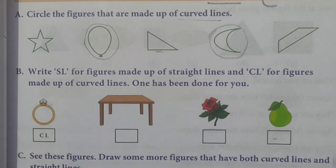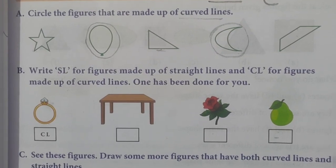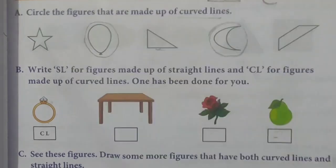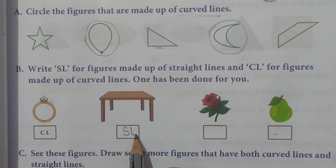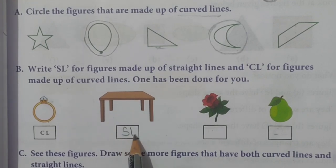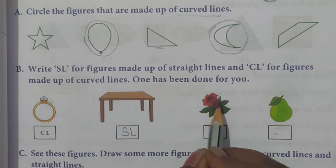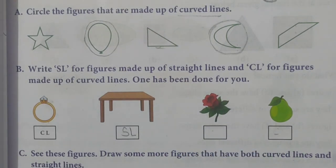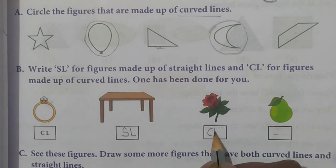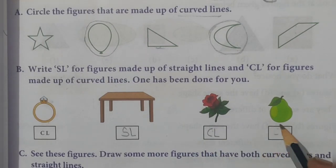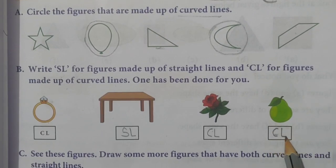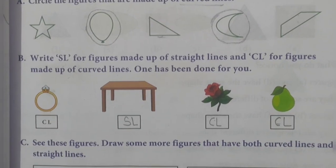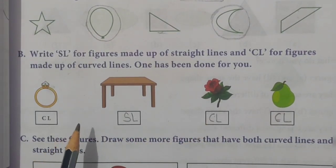Now observe the table — is there any curved line in the table? No, all lines are straight lines. So we write SL here for straight line. Similarly, we go through each figure: if all lines are straight lines we write SL, and if there are curved lines we do not write SL.